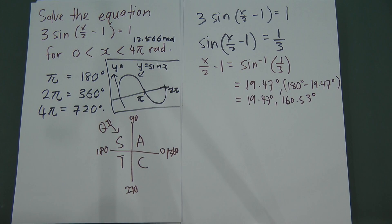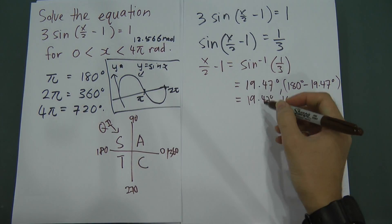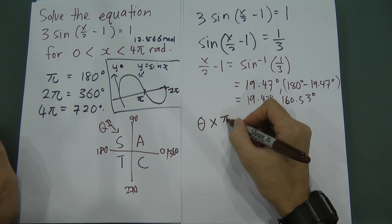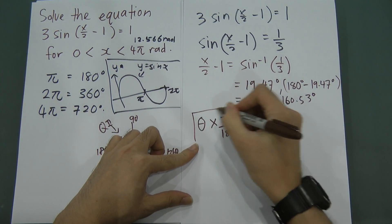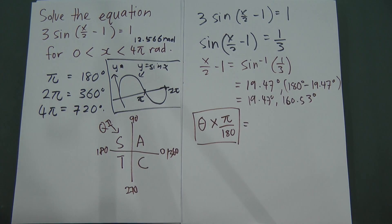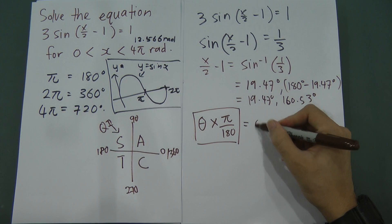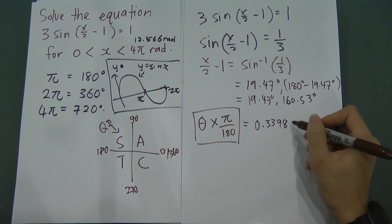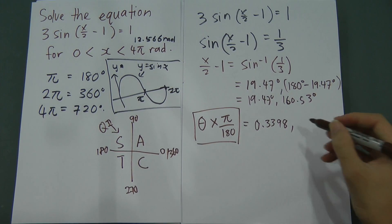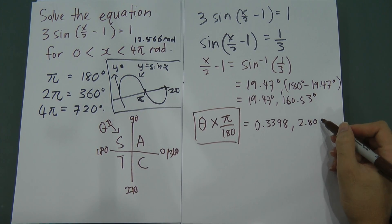Now I change these degree values to radians. To convert degrees to radians, multiply by pi divided by 180. So 19.47 times pi over 180 gives 0.3398 radians. And 160.53 times pi over 180 gives 2.8018 radians.